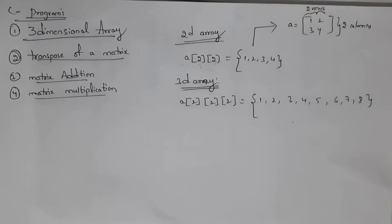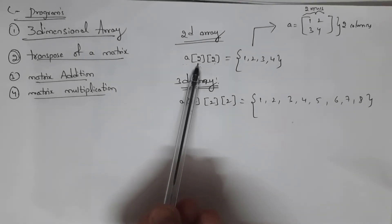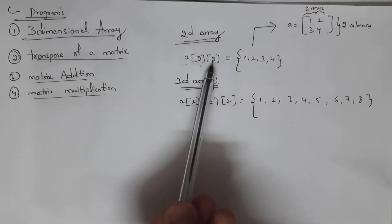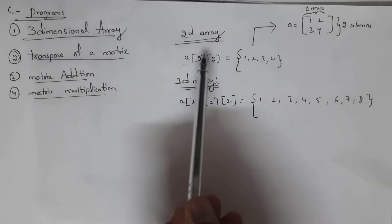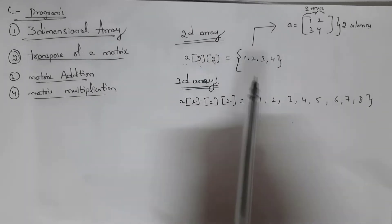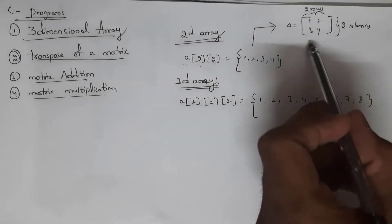First I will explain the program for three-dimensional array. For example, if you consider a two-dimensional array, it contains only two dimensions where the first dimension represents rows and the second dimension represents columns. That means total I can store 2x2, that is four elements. Let the elements be 1, 2, 3, 4. This is how a two-dimensional array looks.